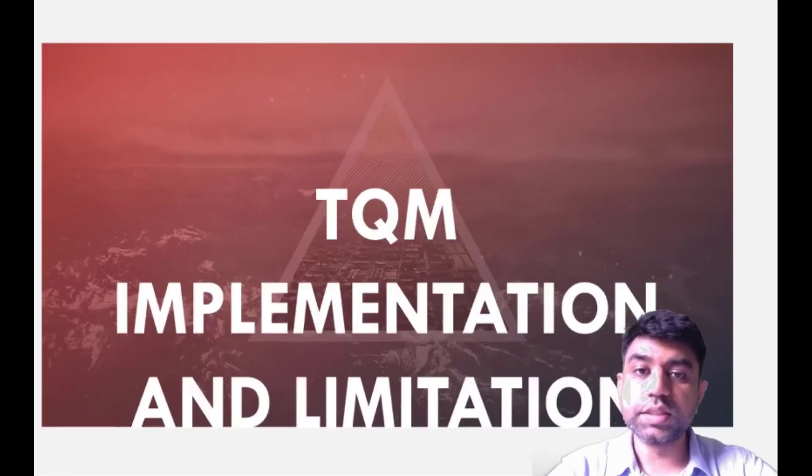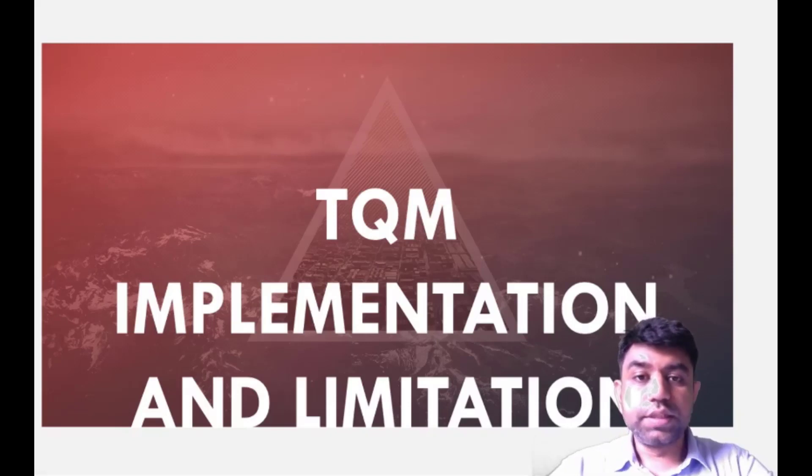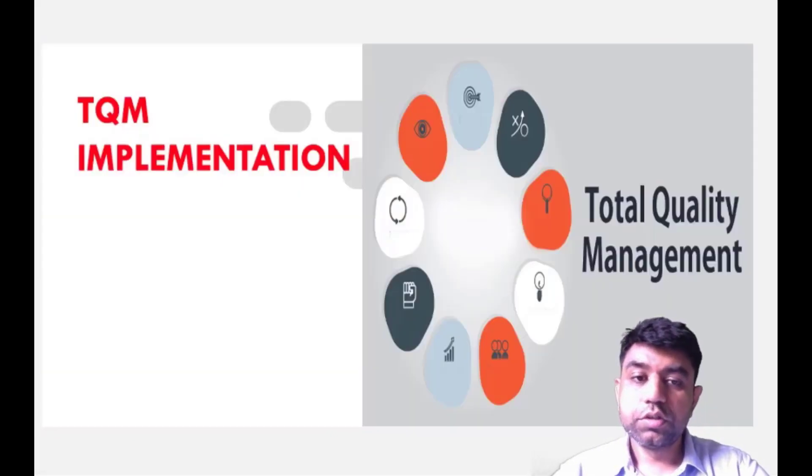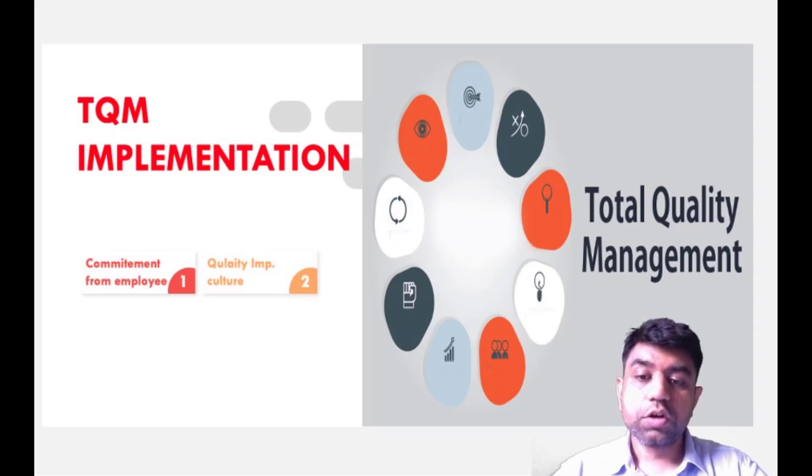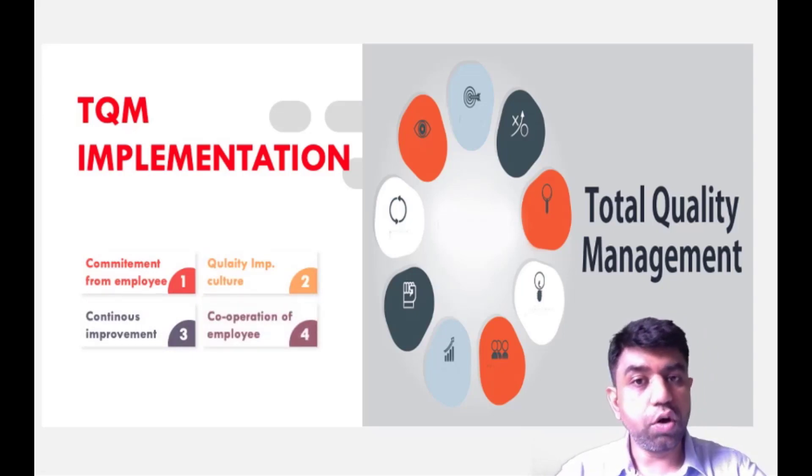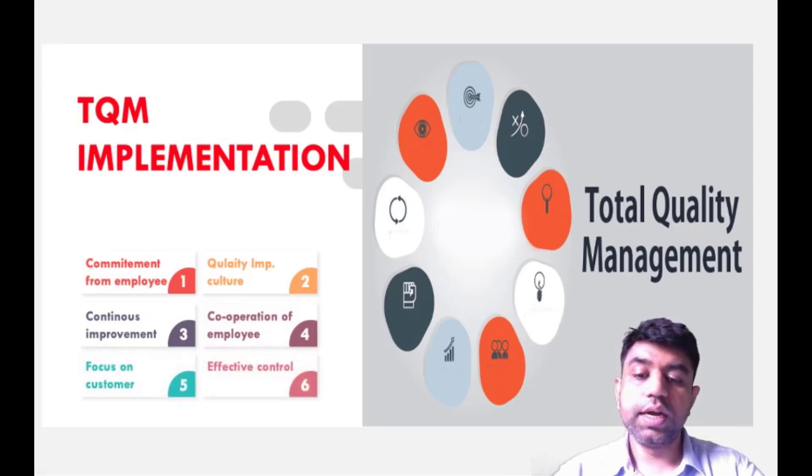Now, let us summarize the entire chapter with the concept of TQM implementation and limitation. That is the last topic of chapter 2. So in order to implement total quality management in any of the industry, we need commitment from the employee. Each and every employee must be involved. We want quality improvement culture throughout the organization. We need to go for continuous improvement, that is Kaizen. We need to have cooperation of all the employees of the industry. We need to focus on the customer. And lastly, effective control of all the activities is required. If we do this thing in any of the organization, we can achieve total quality management.